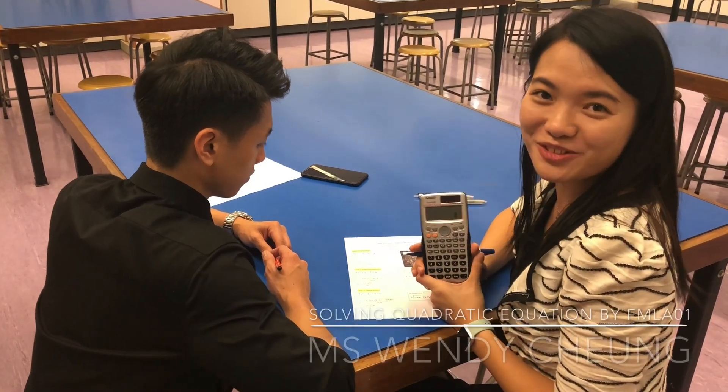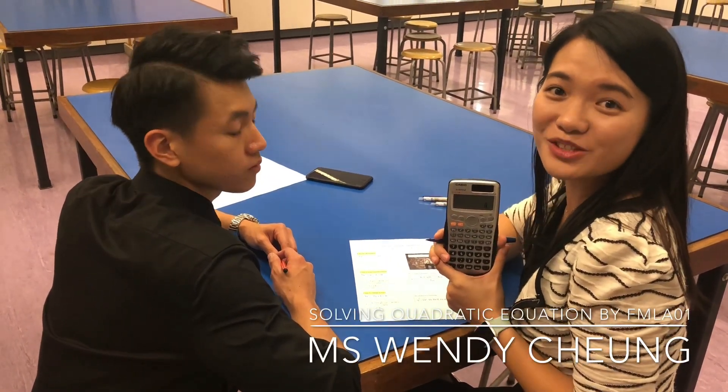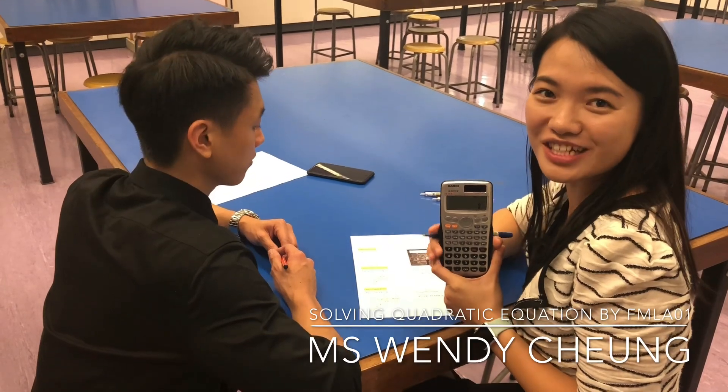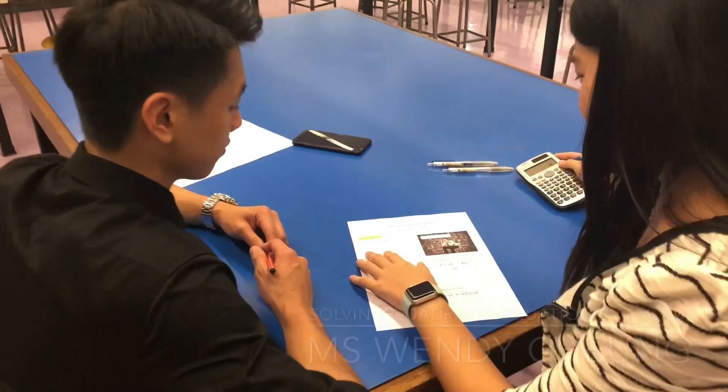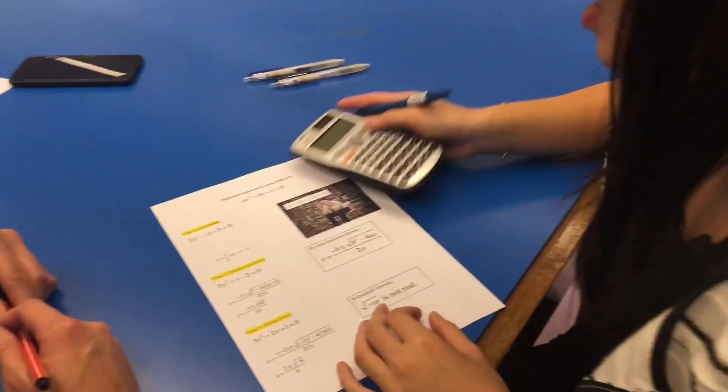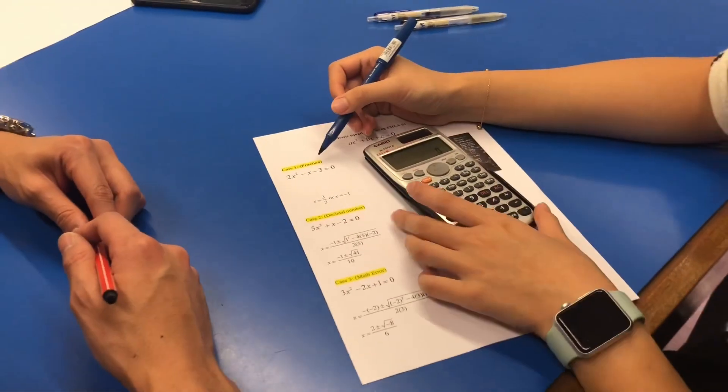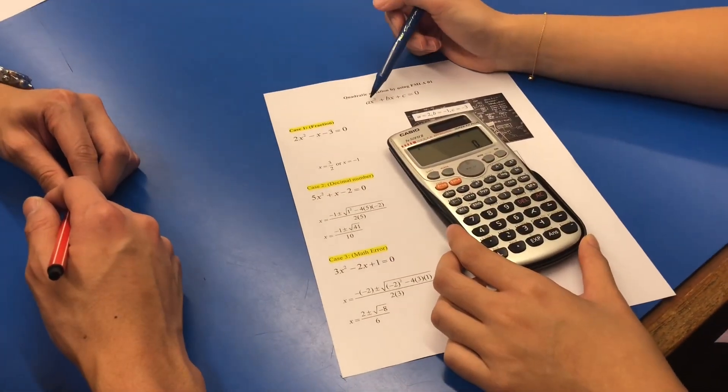Today I'm going to show you how to use calculator formula 1 to solve quadratic equations. There are three different cases. The first case has fractions. You input the A, B, C values: formula 0 1, then you input 2, then negative 1.